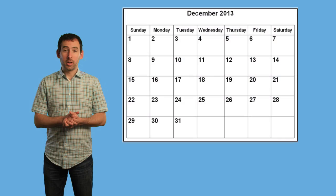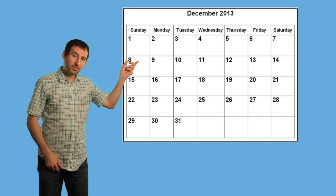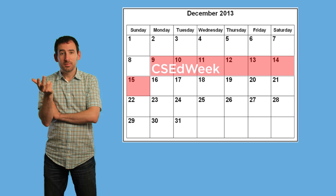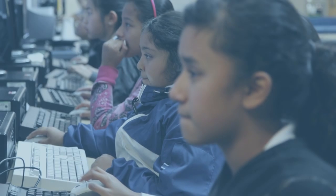Now let's talk about how to run the Hour of Code itself. You can do the Hour of Code any time between December 9th and December 15th — that's Computer Science Education Week. Our goal is to have at least 10 million students do an Hour of Code sometime during that week.